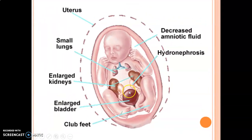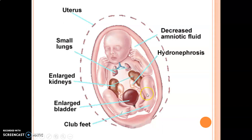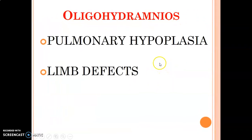An example of obstructive uropathy shows obstruction at the urethral level causing the bladder to enlarge and the ureters to enlarge — this is hydronephrosis, where the kidneys and ureters are enlarged and the bladder is enlarged, resulting in oligohydramnios. With less fluid, the child cannot move, so there is no symmetrical development. The musculoskeletal system is affected — club foot develops because there is no space to move freely. The lungs do not develop well either, causing pulmonary hypoplasia, since amniotic fluid is needed for lung, limb, and symmetrical development.